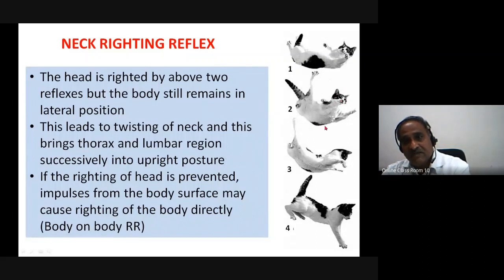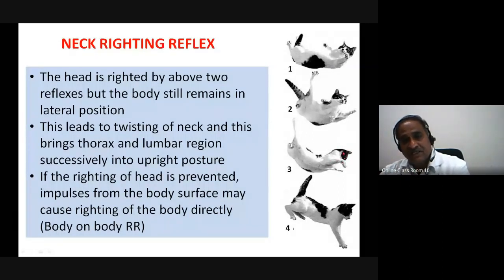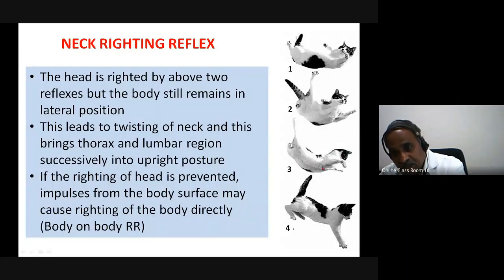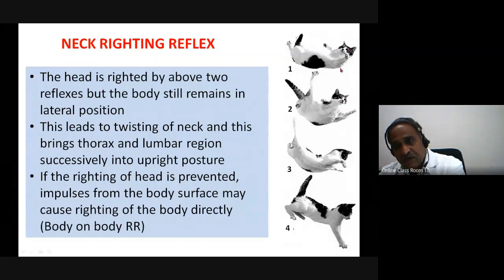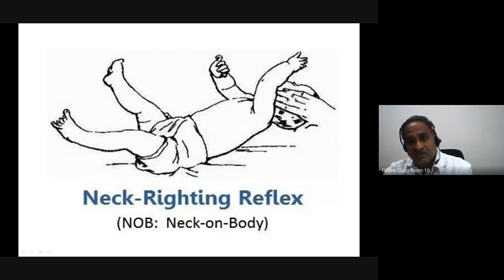First, vestibular reflexes make the head upright; then neck righting reflexes keep the head in position — but still the body is not yet arranged. In a baby example, the neck righting reflexes are elicited: when the neck is moved, it tries to make whatever positioning of the body follows.